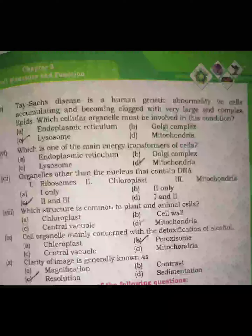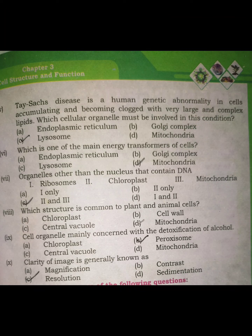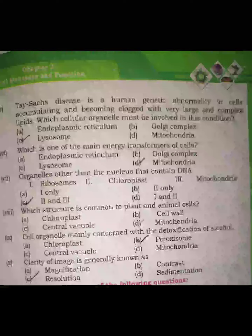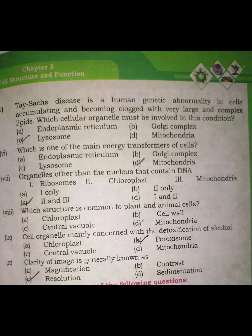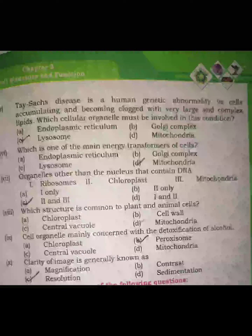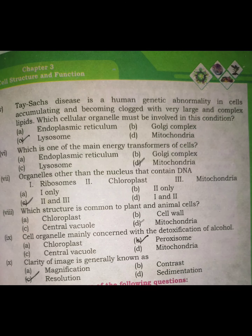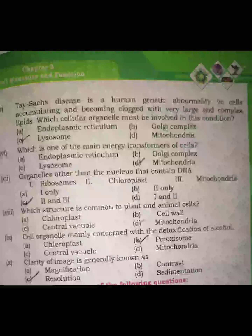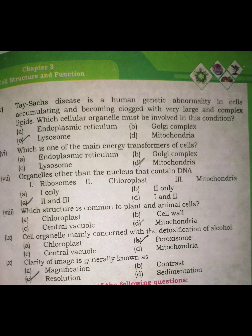The fifth MCQ: Tay-Sachs disease is a human genetic abnormality in which cells accumulate and become clogged with very large and complex lipids. Which cellular organelle must be involved in this condition? Tay-Sachs is a genetic abnormality, and the organelles involved are the lysosomes.